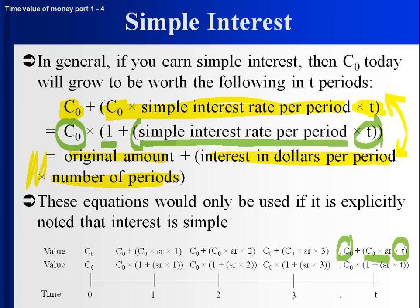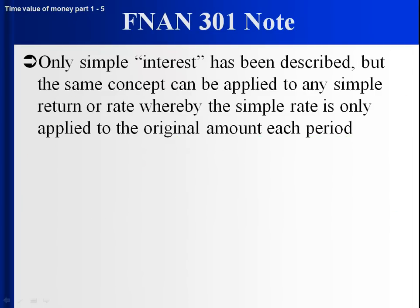Important point: only use these equations if it's explicitly noted that interest is simple. We're also going to talk about compound returns and compound interest — that is what is assumed if nothing is specified. So unless it says simple interest or simple returns, do not assume simple. The rate is applied only to the original principal, not to any earnings accrued over time.